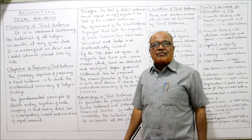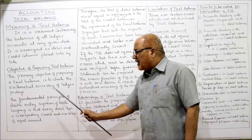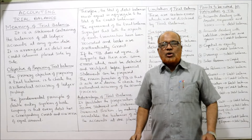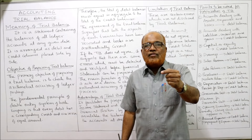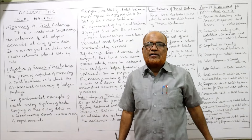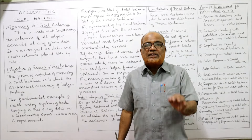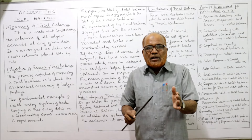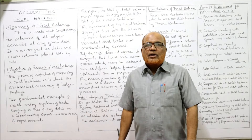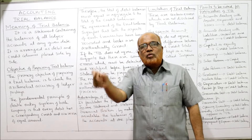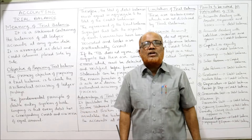The objective of the trial balance is to check the arithmetical accuracy of the ledger posting. In the double entry system of bookkeeping, for every transaction one account is debited and another account is credited — two aspects exist in every transaction. One account is debited and the other account is credited with an equal amount. Therefore, the total of debits and the total of credits must be equal — that is the fundamental principle of double entry bookkeeping.